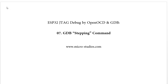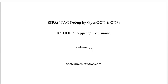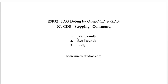In the previous video, we have seen the continue command, which continuously runs the code until it meets a breakpoint. The stepping command is to run the code by steps. We have three types of stepping commands: next, step, and until. Let's take a look at how we use these three stepping commands to debug our code.